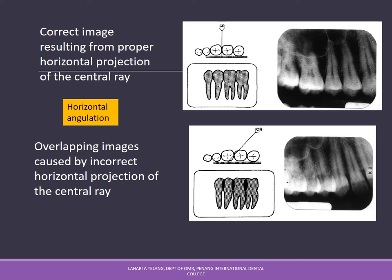Regarding horizontal angulation: with correct horizontal projection of the central ray, where the central x-ray passes at 90 degrees to the film and the embrasures between the teeth, you get very good proximal contacts and correct horizontal angulation. If there is a change in horizontal angulation, overlapping images result — the proximal surfaces of the teeth overlap each other, obscuring findings in that area.